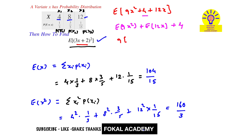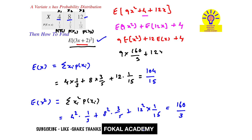This simplifies to 9 times E[x²] plus 12 times E[x] plus 4. Substituting E[x²] = 160/3 and E[x] = 104/15, we get 9 times (160/3) plus 12 times (104/15) plus 4, which simplifies to 567.2. This is the required answer.